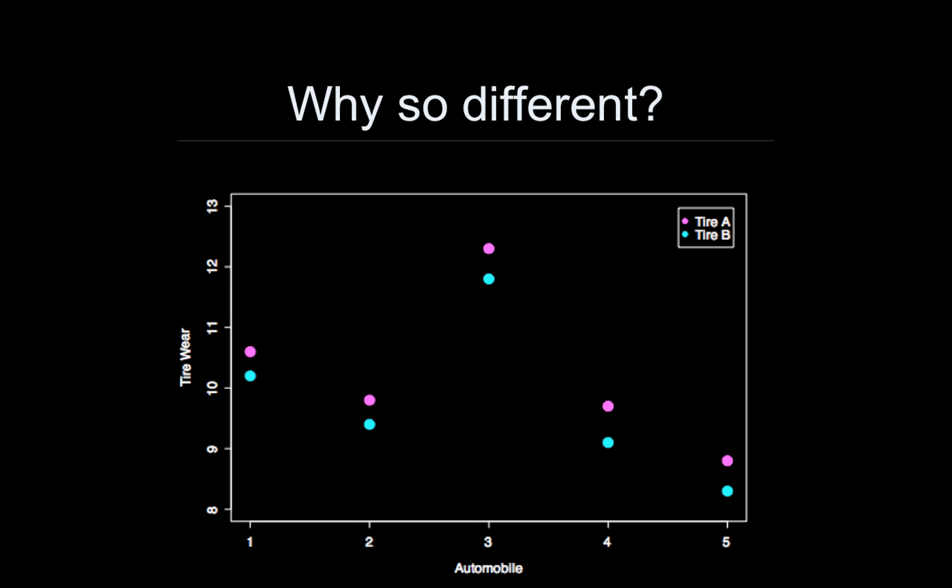Why are these two models, why do they give such different results? Well, here I've plotted the data in a bit of a weird way, but it's easier to visualize it this way. I have each automobile along the x-axis, and the tire wear is along the y-axis. I did tire A in pink, and tire B in blue. Just eyeballing it, you can see these data clearly have a within-automobile effect. You can also see that there's an A versus B effect.